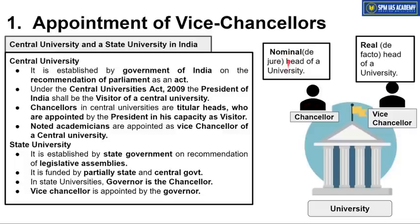Visitor yaha pe technical word hai — it is the supreme post for a central university. Kisi bhi university ke andar ek hote hain chancellor aur ek hote hain vice chancellor. Chancellor jo hote hain, he or she is known as the nominal head of the university — just like in the Union government the President is the nominal head, but the real executive head is the Prime Minister. Similarly, university ke andar chancellor is the nominal head while vice chancellor is the real head.